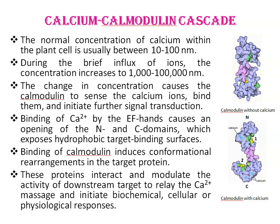Now, the calcium-Calmodulin cascade. The normal concentration of calcium within the plant cell is usually between 10 to 100 nanomolars. During the brief influx of ions, the concentration increases to 1000 to 10000 nanomolars.